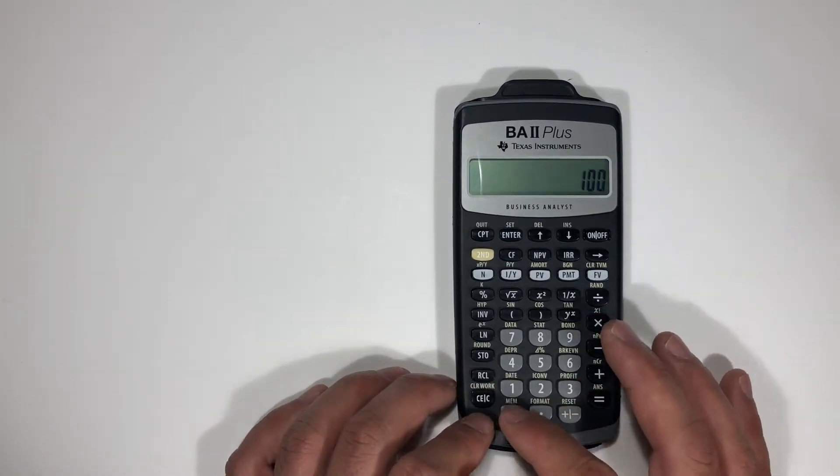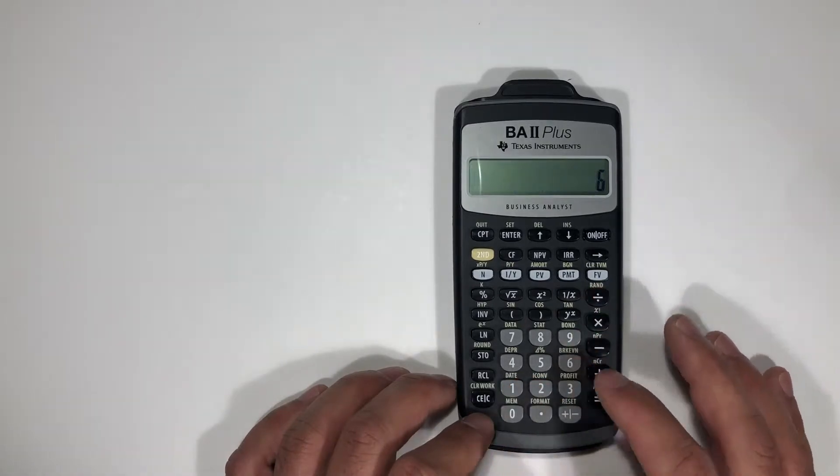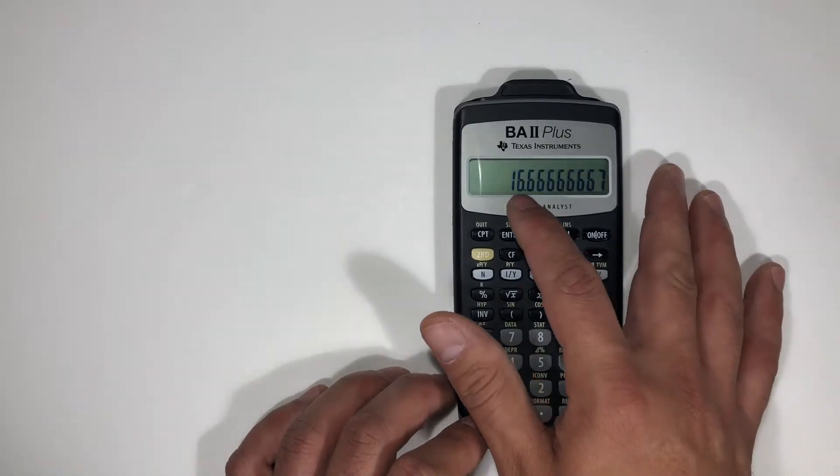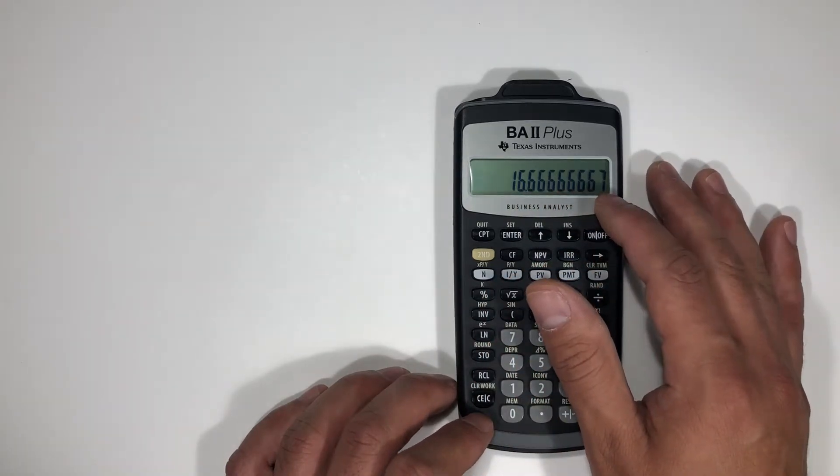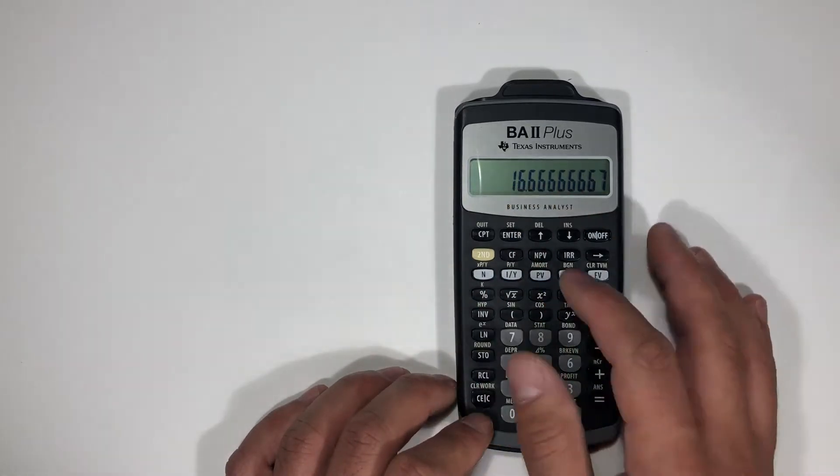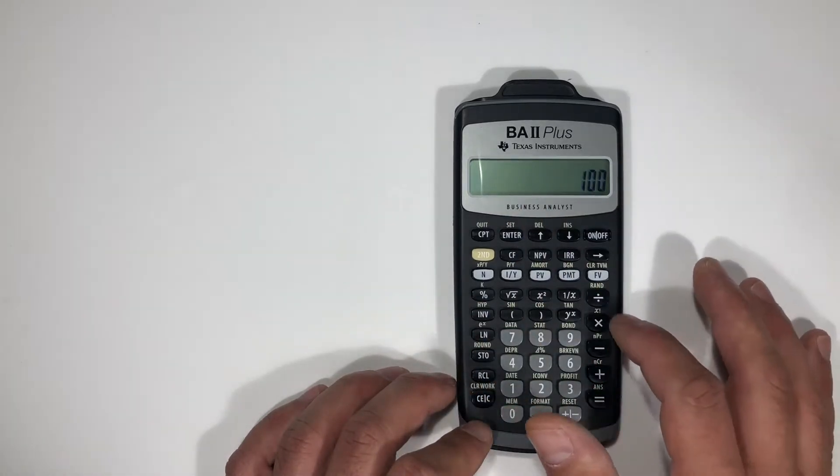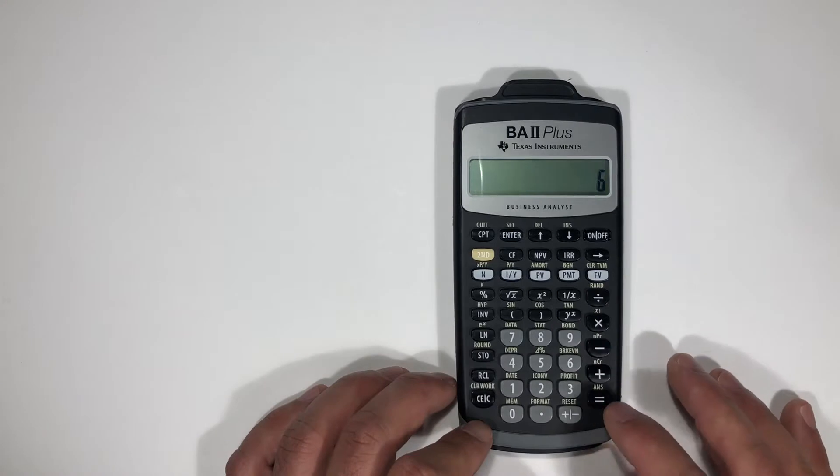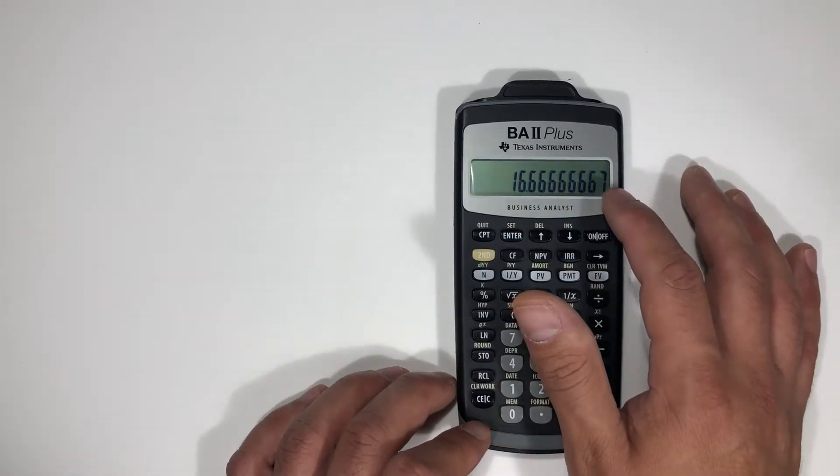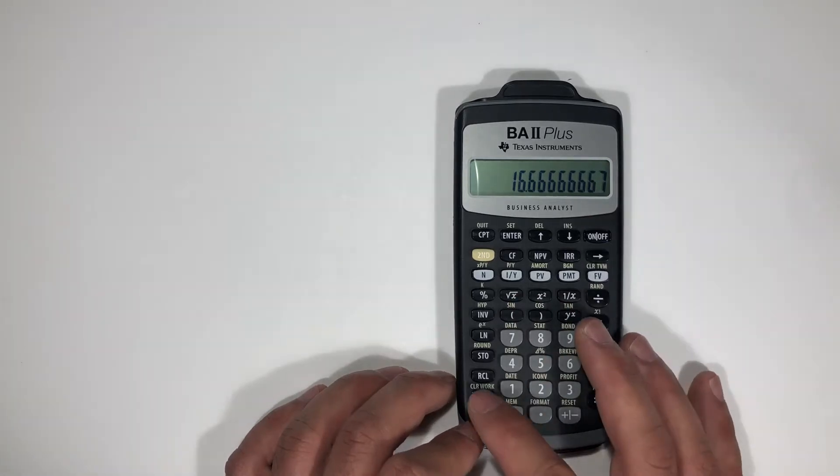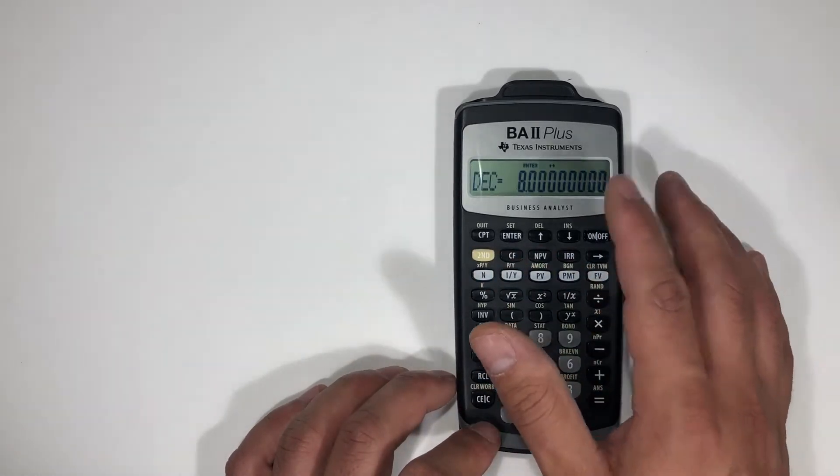So let's go 100 divided by 6. See it takes you 16.6666667 all the way down. So we divided 100 by 6, it gives you 6s all the way down here to this end and then it rounds the very last number. So let's go second format and we're going to set this at 2.